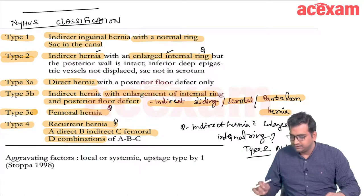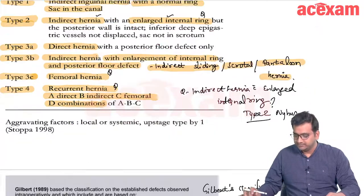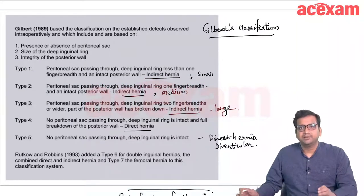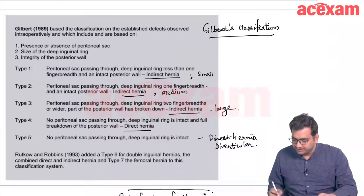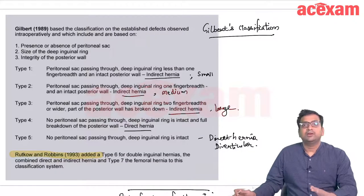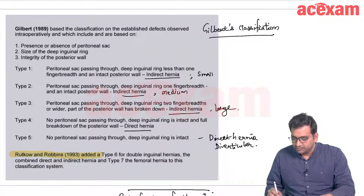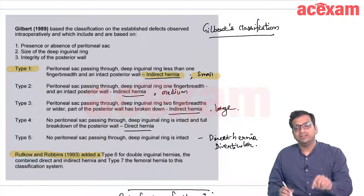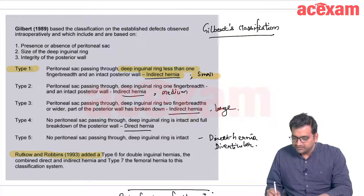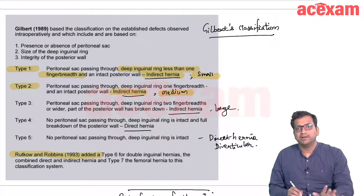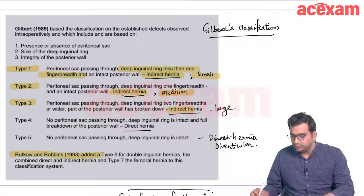The next classification is Gilbert's classification. Gilbert originally divided hernias into 5 types, and later Rutkow and Robbins added 2 more, making 7 types in total. Type 1 is indirect hernia which is small — less than one finger breadth at the deep inguinal ring. Type 2 is indirect hernia which is large — two finger breadths can be passed.